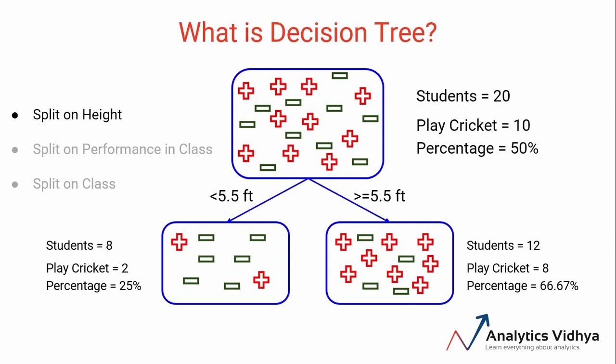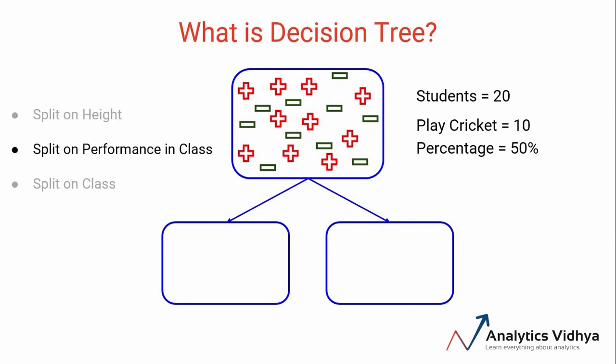With me so far? But what do you think - out of the given three variables, is height the right one? And why 5.5 feet? Could it be 6 feet or something else as well? Well, let's first try with another variable.